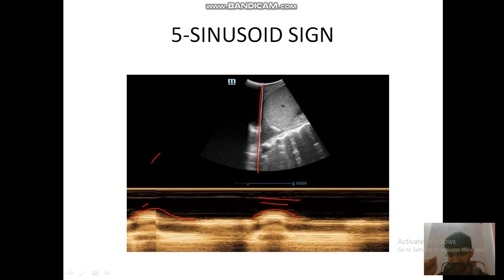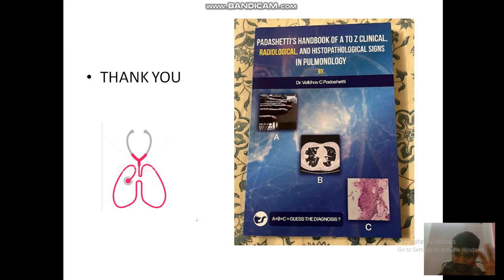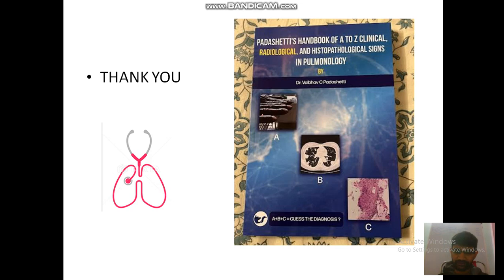Today we studied three important M-mode signs: the seashore sign seen in normal lung, the stratosphere sign or barcode sign, and the sinusoid sign seen in pleural effusion — five important signs in total. If you have any doubts, please leave them in the comment box, or if you want further clarification or want any other sign, CT sign, or X-ray sign covered, I'll be coming with that video in subsequent days. All images are taken from the book known as Purchetti's Handbook A to Z of Pulmonology. Links are given in the description — available on Amazon, Flipkart, Google, and Kindle. Thank you for your patience and listening.